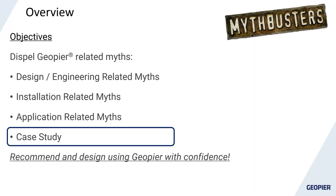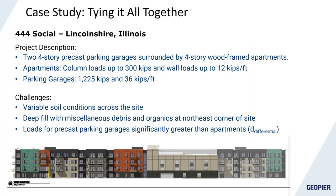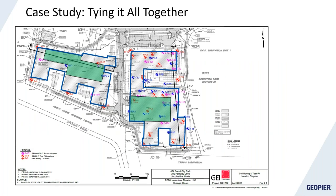Now for the case study, which ties together many of the myths from today. The project is in Lincolnshire, Illinois — a suburb northwest of Chicago — consisting of two wrap-around precast parking garage residential structures. The apartments had relatively light loads: 300-kip column loads and 12 kips per foot wall loads. The parking garages were much heavier: up to 1,200 kips per column and 36 kips per foot on wall loads, with a variety of challenges to overcome.